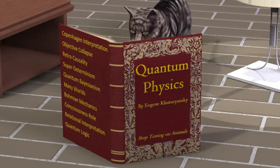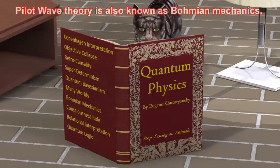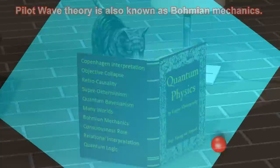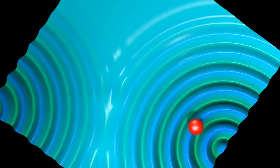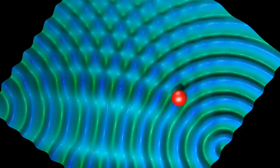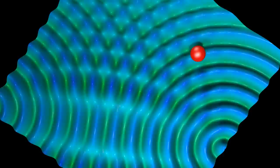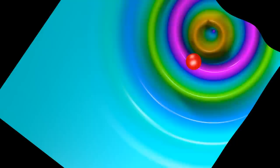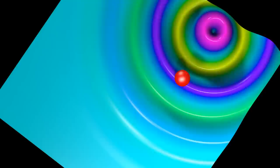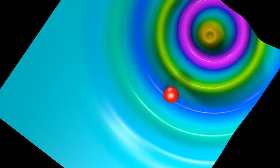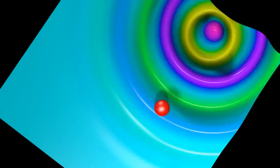Let us now turn to the Pilot Wave Theory interpretation of quantum mechanics, also known as Bohmian Mechanics. Pilot Wave Theory states that the universe is completely deterministic: all particles always have a definite position and velocity, and the motion of these particles is guided by waves. However, for this theory to work, interactions in any one location must be felt everywhere instantly, thereby sending messages faster than the speed of light and violating Einstein's theory of relativity. The Pilot Wave Theory also has far more additional problems with relativity than does traditional quantum mechanics.